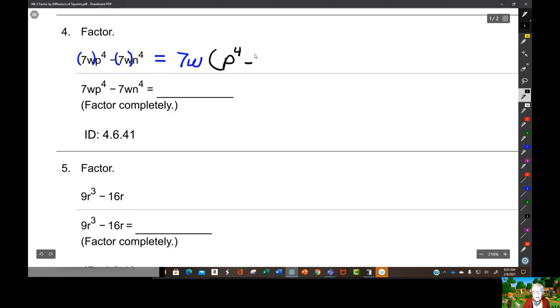P to the 4th minus n to the 4th. Now, the first time you look at it, you might say to yourself, that's not perfect squares, that's perfect 4th powers. Ah, but don't be fooled. P⁴ is p² squared, and n⁴ is n² squared. So you've got p² in this set of parentheses and n² in this set of parentheses.